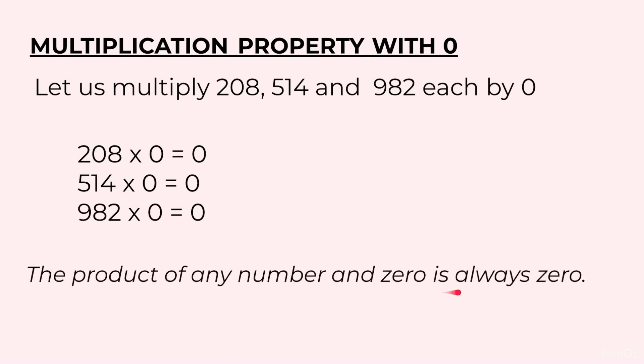The product of any number and 0 is always 0. No matter which number you take, when you multiply a number with 0, you will always get 0 as the product.